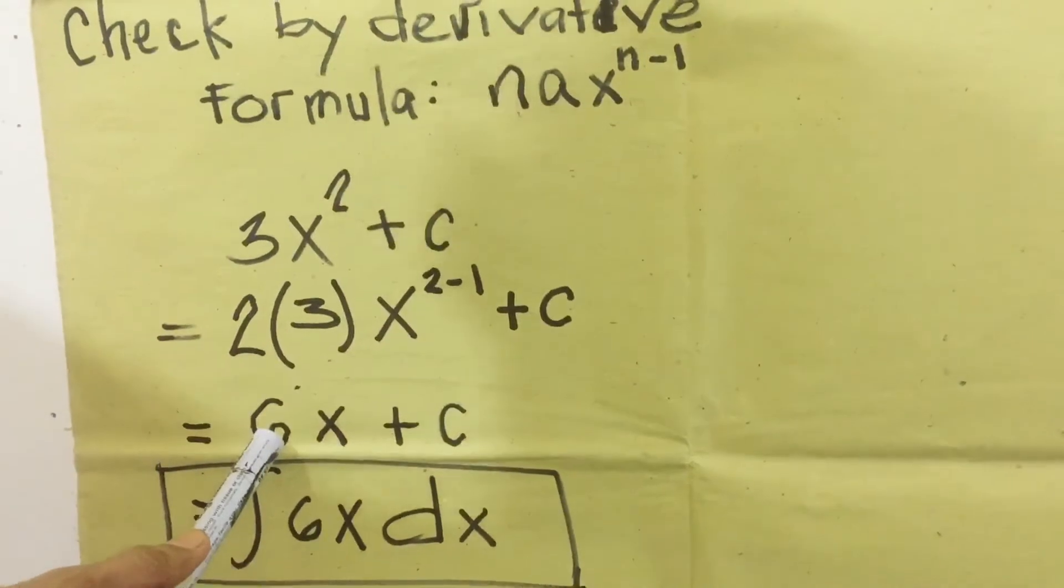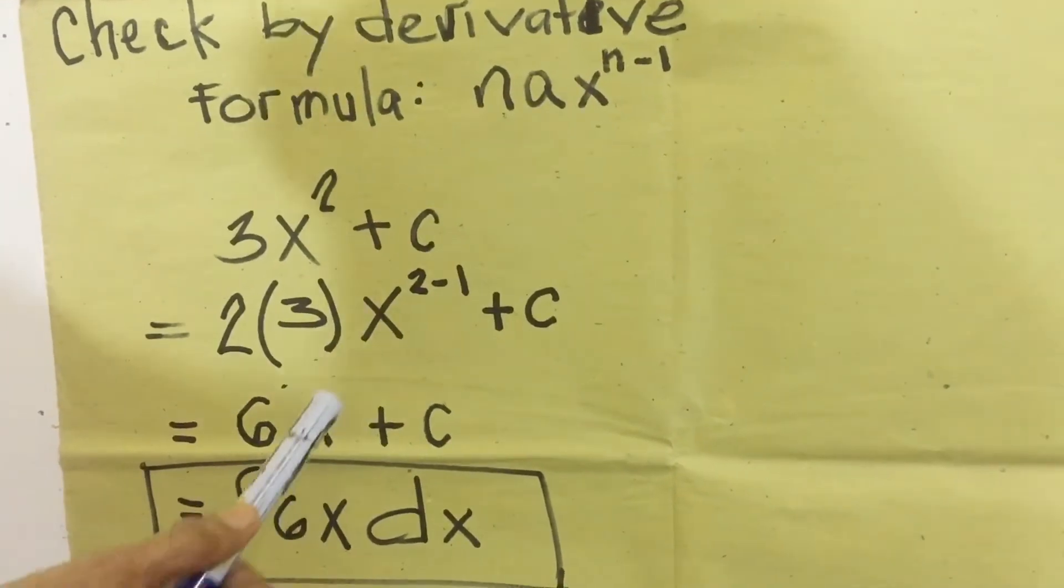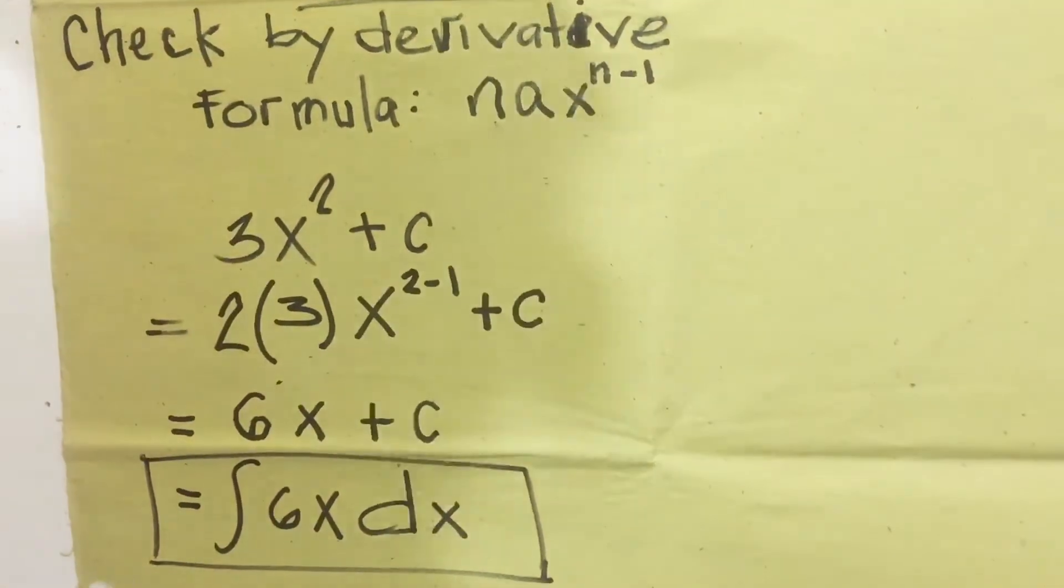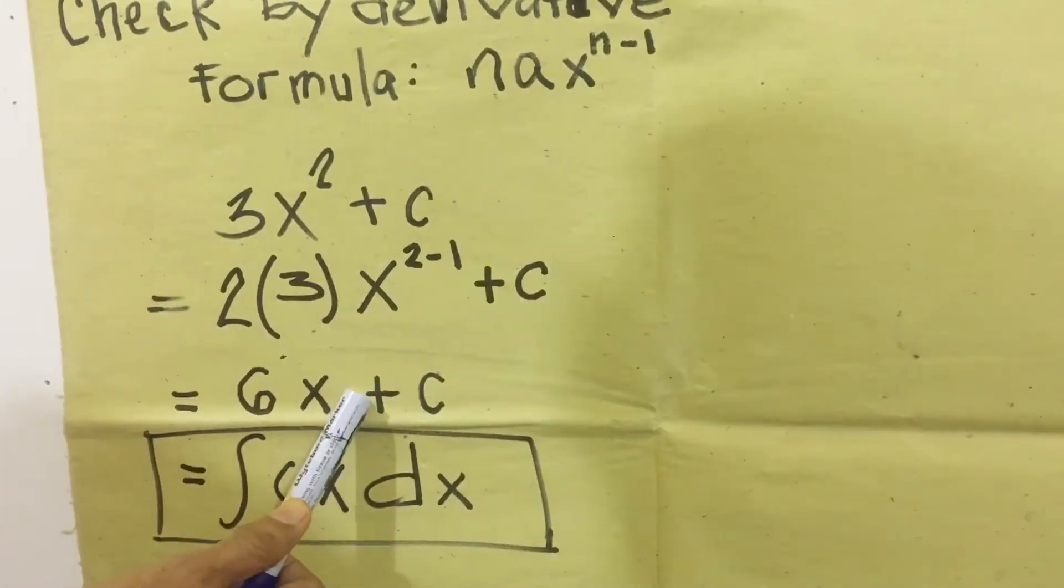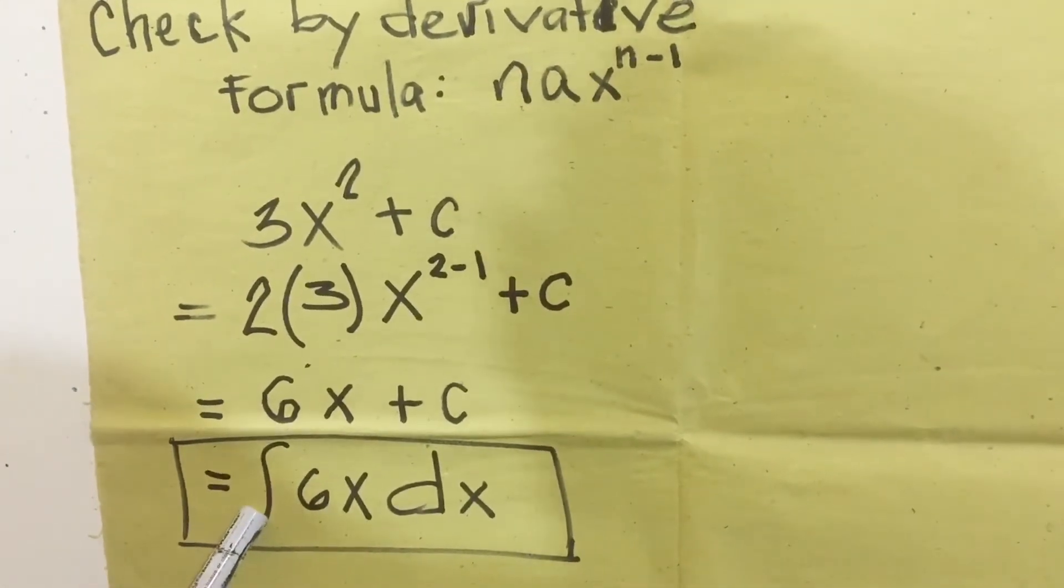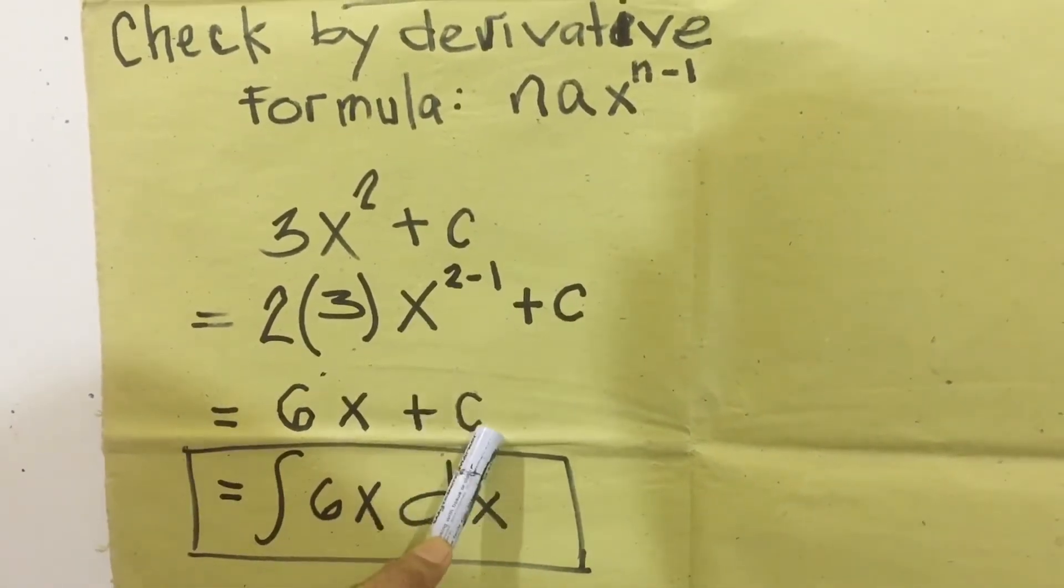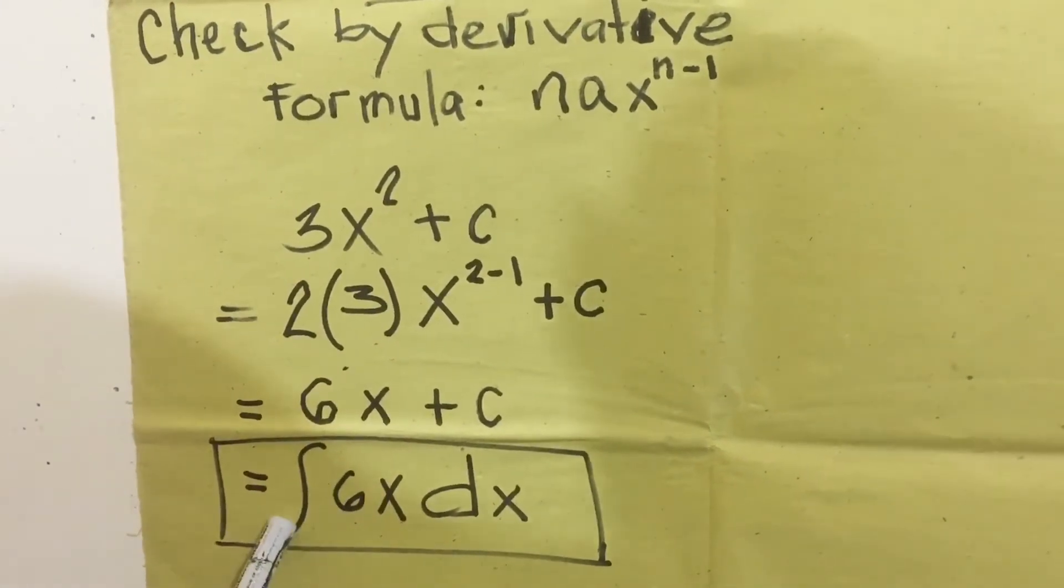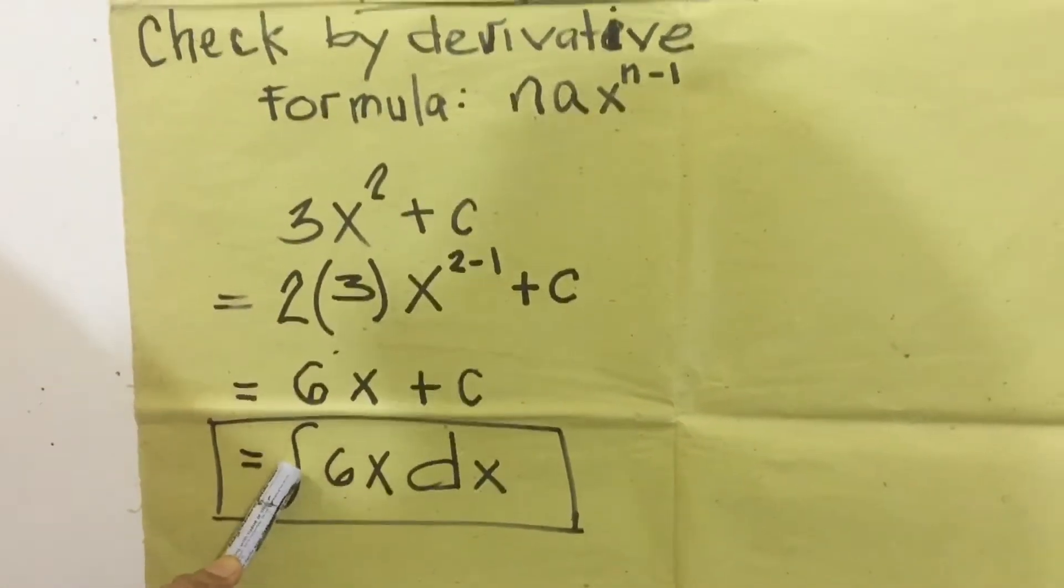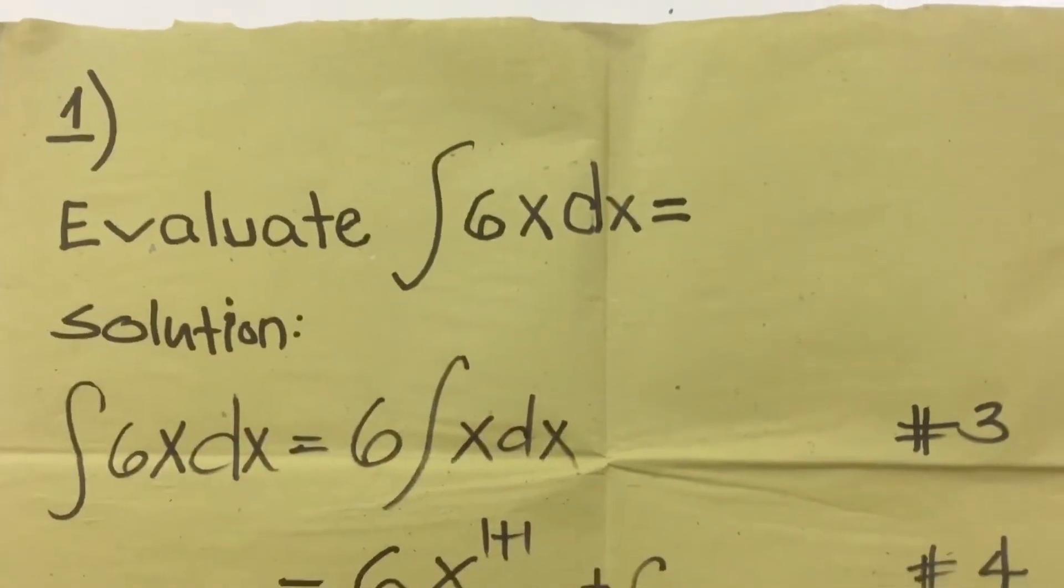Then simplify, two times three, six, two minus one, the variable exponent, the answer is one, that's why it's not written. When it's one, silent. The exponent of one is not written, plus c. Since this is positive, when we remove the positive, we will replace it with an integral symbol. Then copy 6X. The value of C becomes DX. If we look, what we checked is equal to the integration function given in number one.